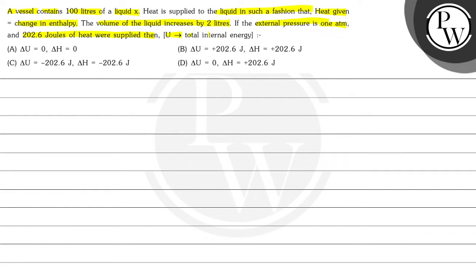then find the total internal energy. Options are: (A) ΔU = 0, ΔH = 0; (B) ΔU = +206.6 joules and ΔH = +202.6 joules; (C) ΔU = −202.6 joules and ΔH = −202.6 joules; (D) ΔU = 0 and ΔH = 202.6 joules.